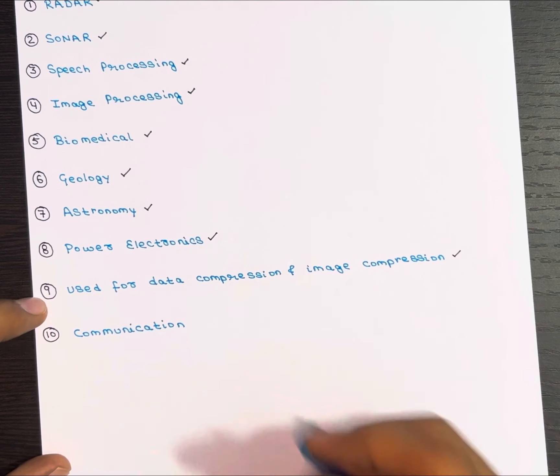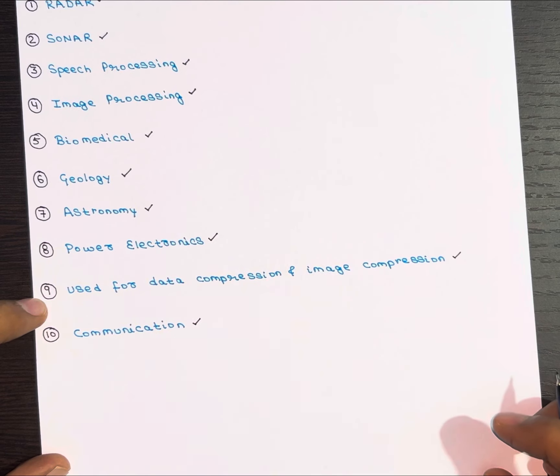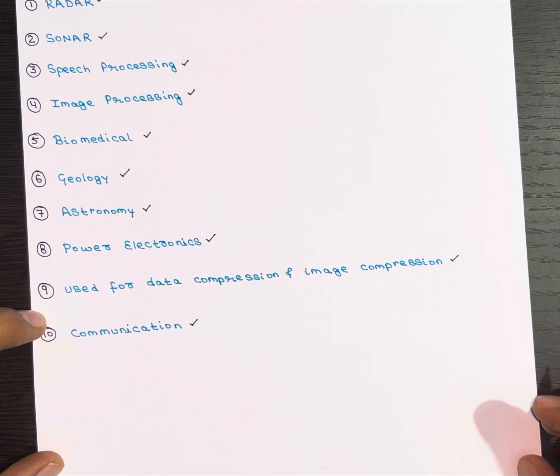Now in communication field, signals received from radars are analyzed to detect flying objects and their velocity. Digital processing is also used for echo and noise cancellation in transmission channels.